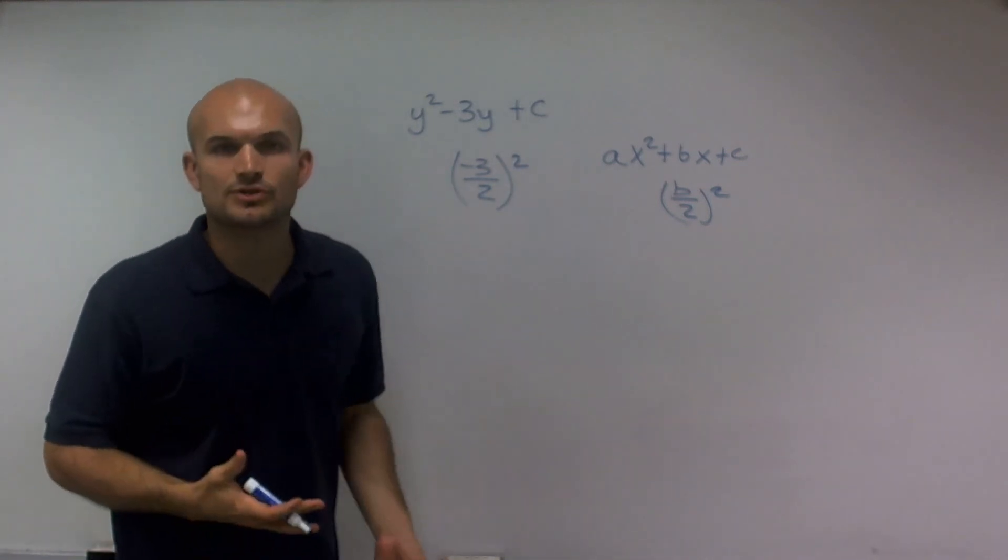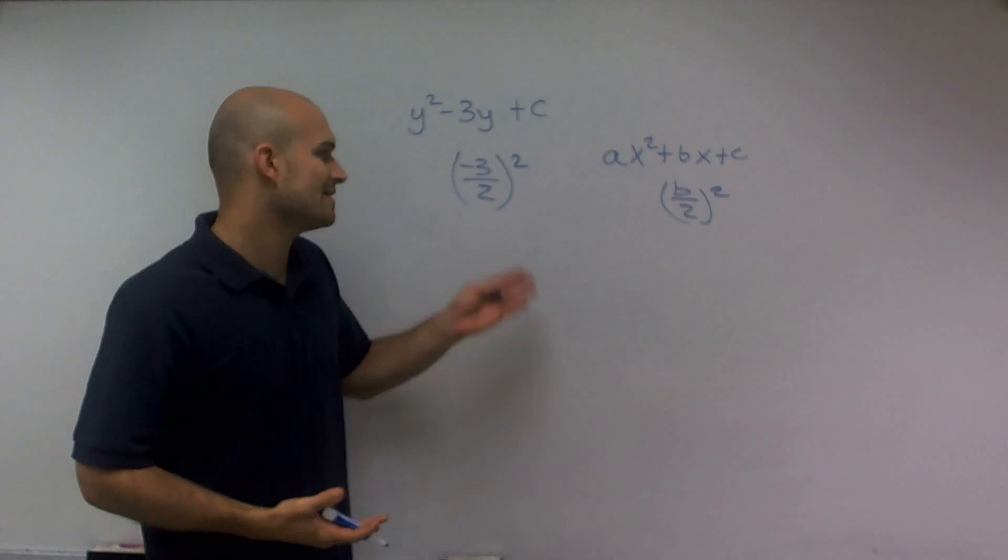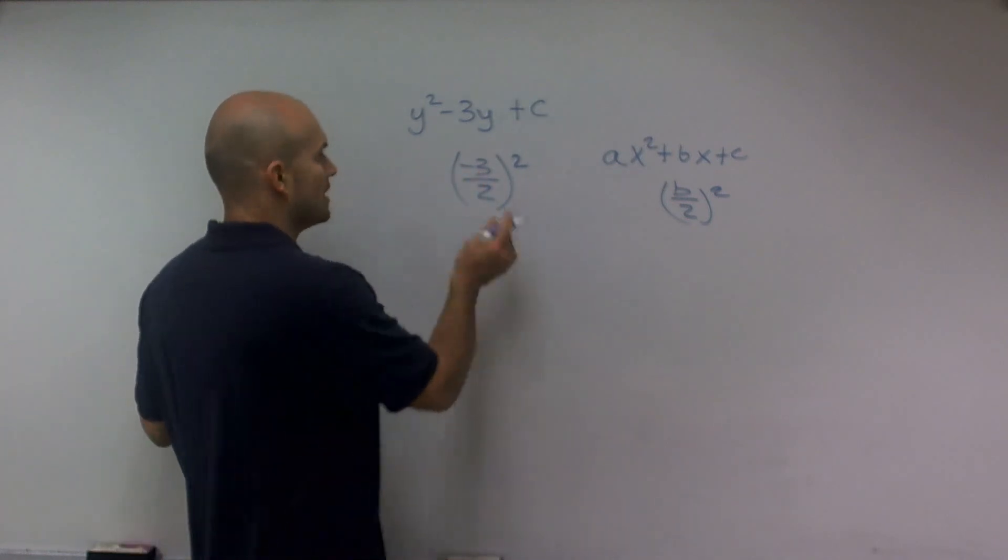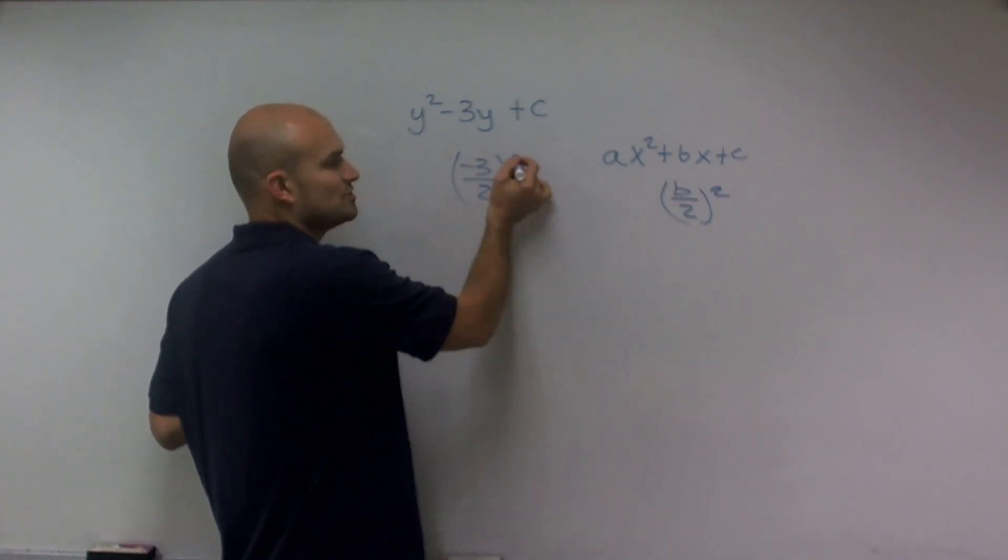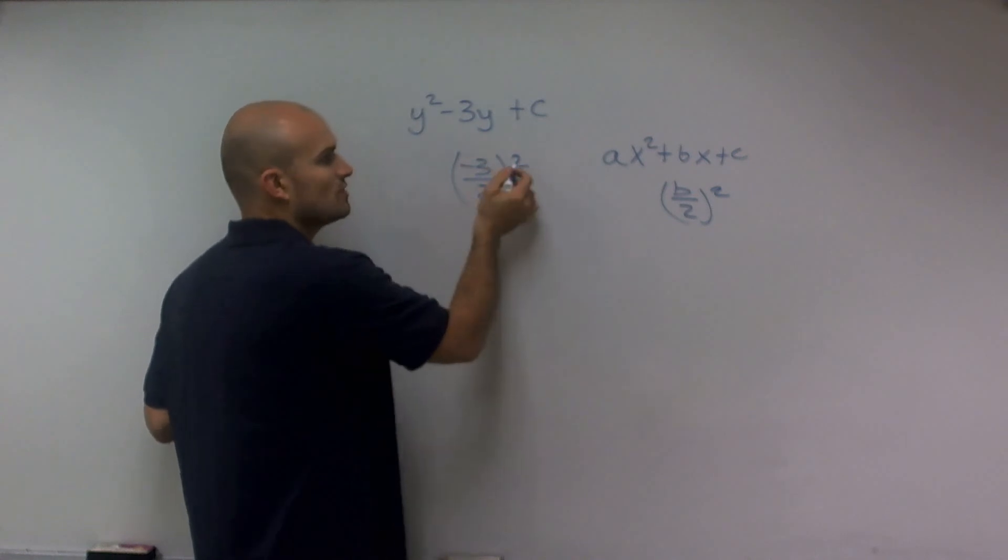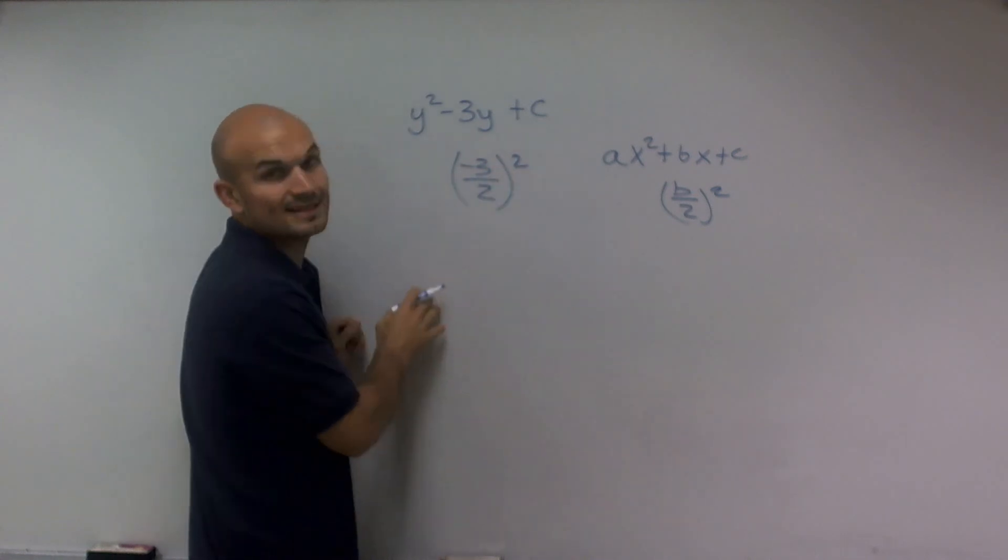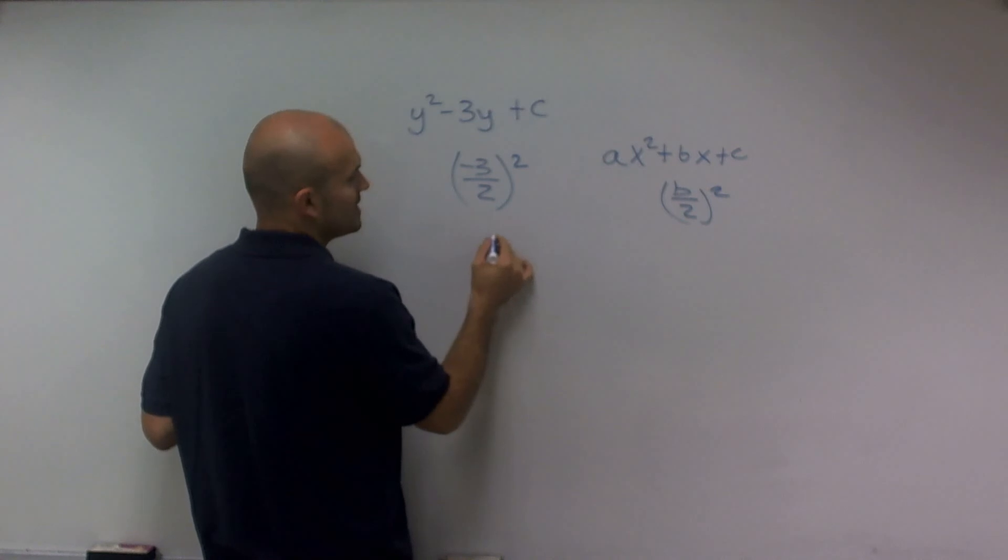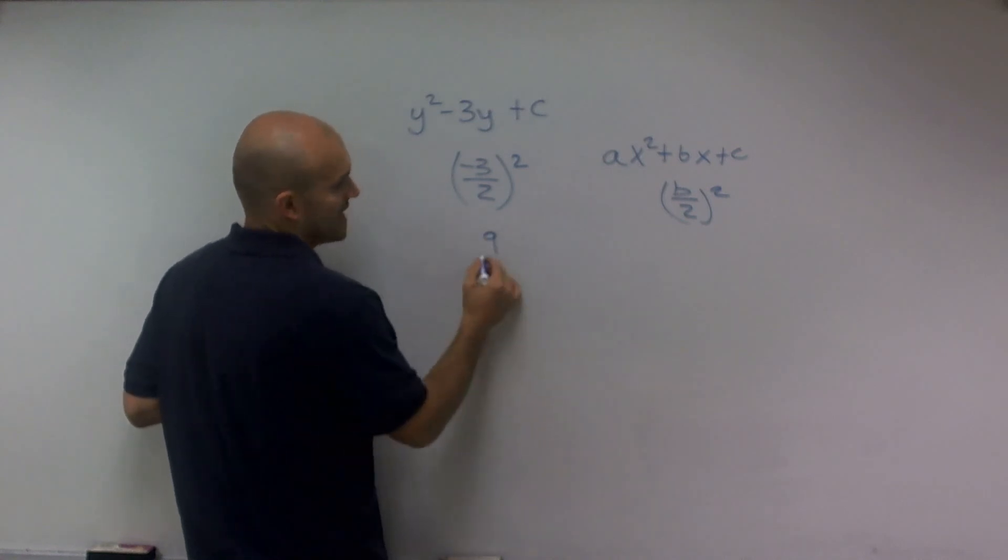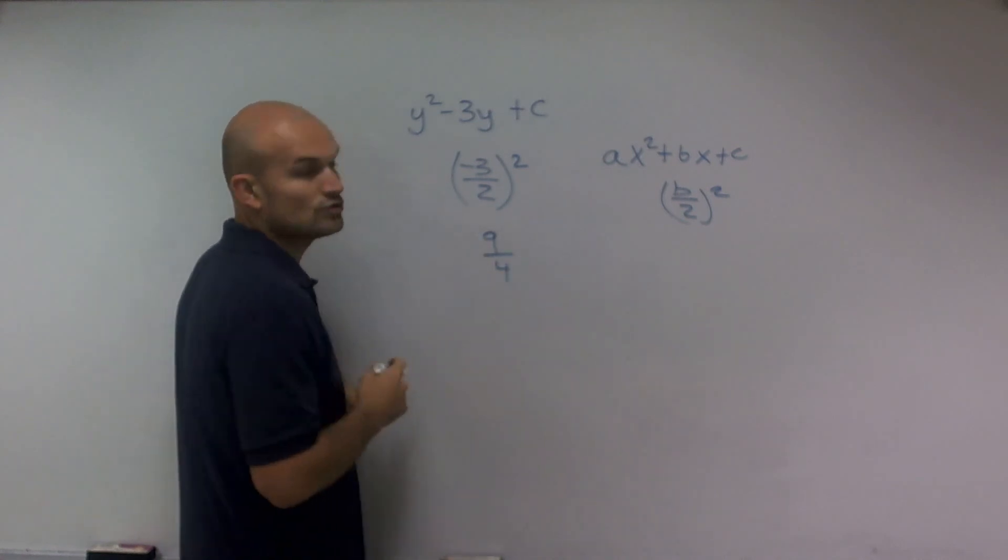Now rather than just divide it by 2 and then square it negative 1.5, I'm going to leave it as this fraction and just use the properties of exponents which allow me to square the numerator and the denominator. So therefore, I'm going to end up with negative 3 squared, which is 9, and 2 squared, which is 4.